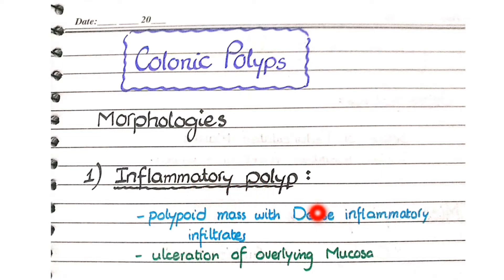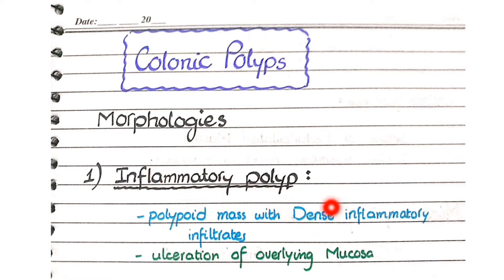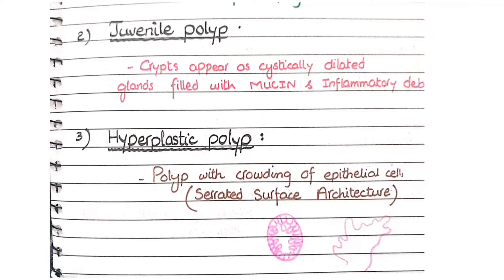Inflammatory polyps, as the name implies, are composed of polyp-like masses with dense inflammatory infiltrate. Because inflammation causes destruction of the mucosa or epithelium, you will also see ulceration of the overlying mucosa. So in inflammatory polyps you see polypoid masses with dense inflammatory infiltrates and ulceration of the overlying mucosa.